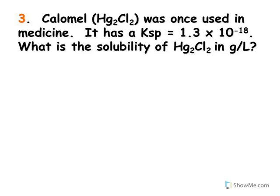Here we'll try to find the solubility of mercuric chloride in grams per liter, given the Ksp of 1.3 times 10 to the negative 18th. First, I'd like to write down the equation that the Ksp is pertaining to — the dissociation of mercuric chloride in solution.